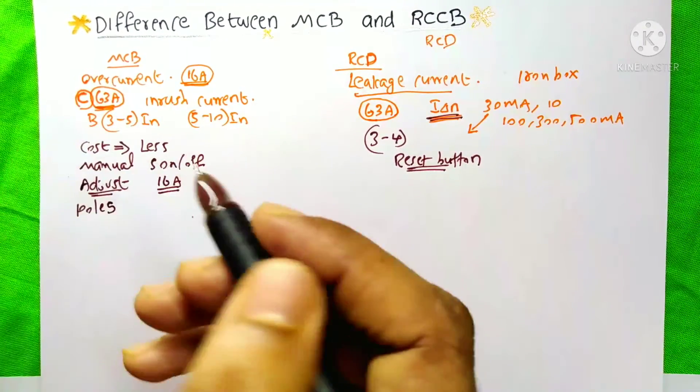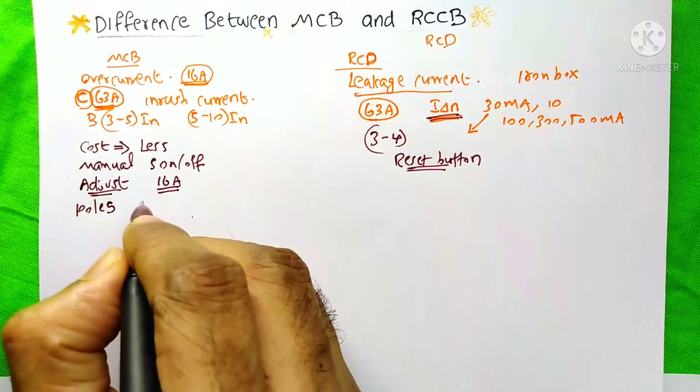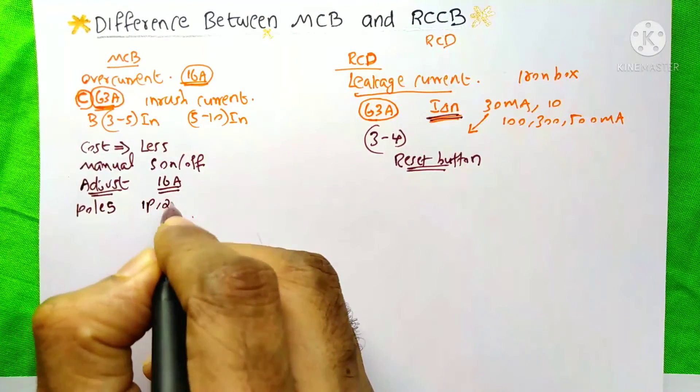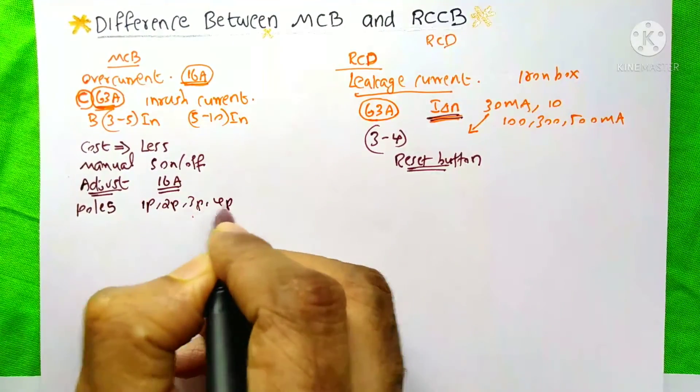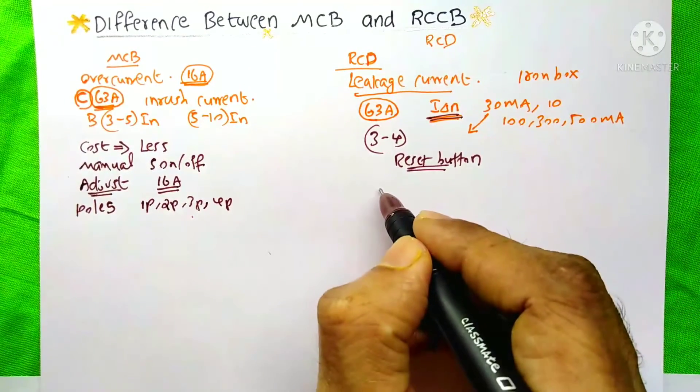And about the number of poles of this MCB, we can see single pole MCB, 2 pole, 3 pole up to 4 pole. But in the case of the RCD, here the poles available are only 2 pole and 4 pole.